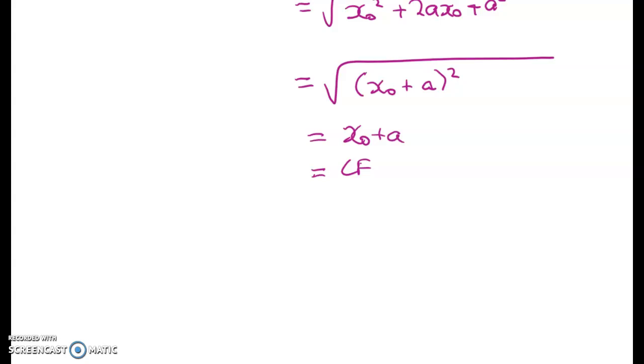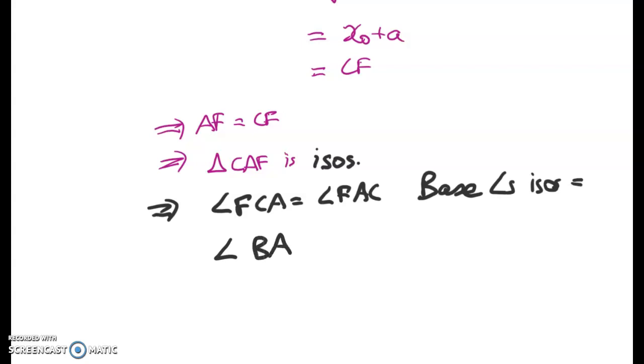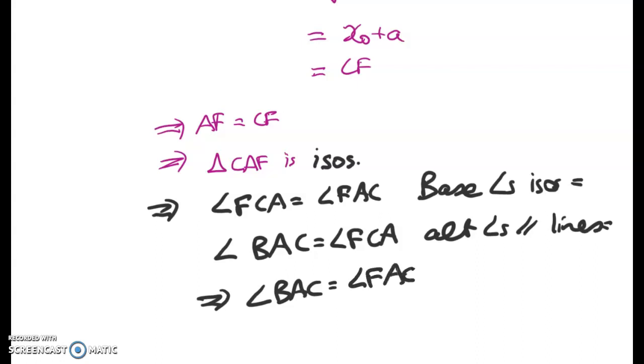Remember we're trying to get the two sides equal and that's about to happen. So (x₀ + a)² square rooted gives me x₀ + a, which is equal to CF. So it would be nice to write some good logic down now. Therefore, AF equals CF. Therefore, triangle CAF is isosceles. That means that the base angles are equal, and that means that angle BAC equals angle FCA because of what we had above. So alternate angles parallel lines are equal, which means that angle BAC equals angle FAC. Therefore, the line AC bisects angle BAF.